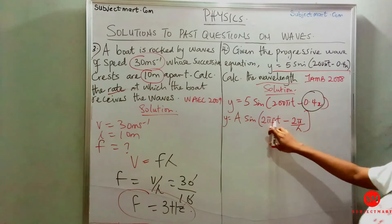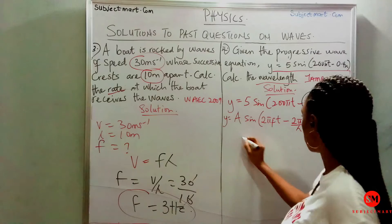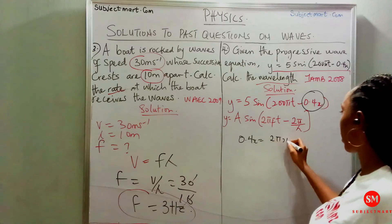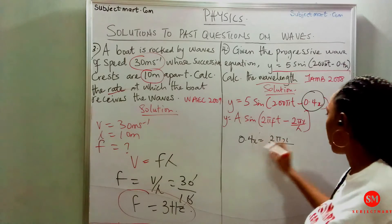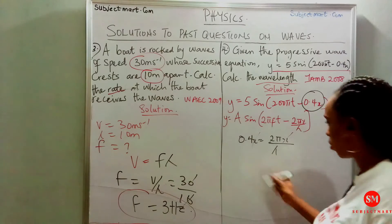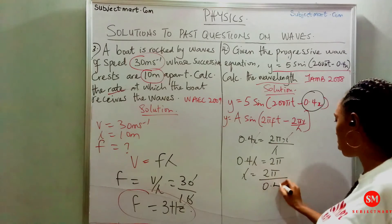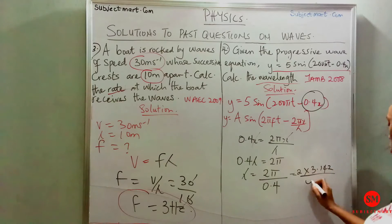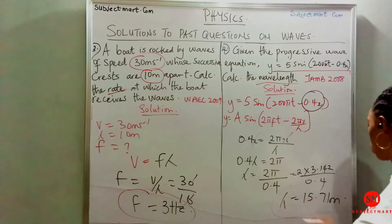We equate the coefficient of x from the given equation to 2π over lambda, because it's carrying what we have to find. So 0.4x equals 2π x over lambda. The x cancels, giving 0.4 lambda equals 2π. Therefore lambda equals 2π over 0.4, which is 2 times 3.142 over 0.4, giving us 15.71 meters. So the wavelength equals 15.71 meters.